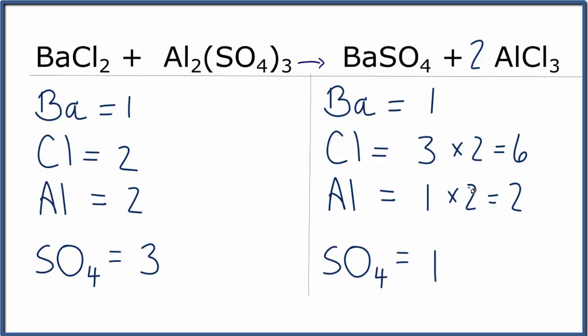because I could put a 3 in front of the barium chloride and update this. So I have 1 times the 3, 3 barium chlorides, and then the 2 times the 3 for the chlorines, 6 chlorines. So now the chlorines are fine. The aluminums are fine.